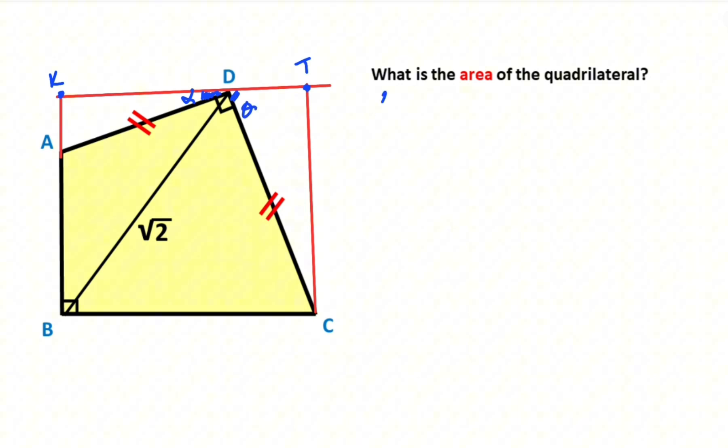We know that alpha plus theta equals 90 degrees. That means here must be equal theta and here must be equal alpha. All right. Of course, these are 90 degrees because we created rectangle, right? ECKD is a rectangle.